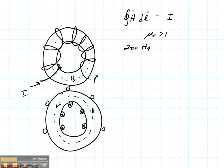So depending on how many turns, n, I have, I'm able to figure out how much current I actually have enclosed.